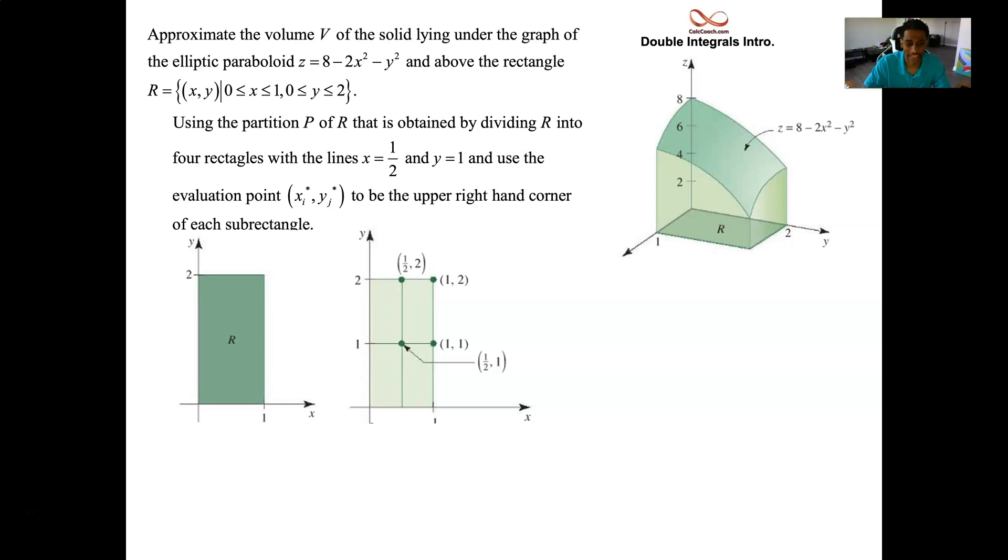We have those points: one-half and one, one-half and two, one and one, and one and two. We're going to evaluate the function at those places. Simple enough function, we can do it without a calculator. Here's what the volume will look like, the approximation. It's an underestimate. It's not going to be very close from the picture to what the true volume will be, but we're just getting started with the approximation.